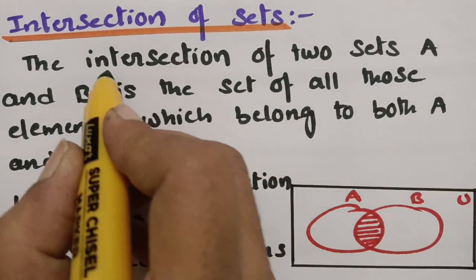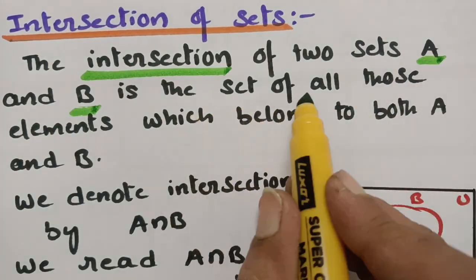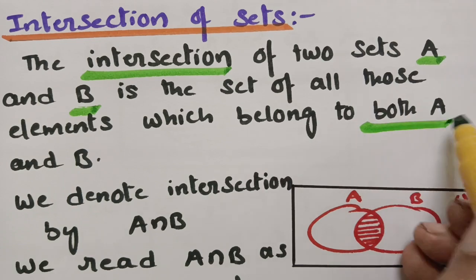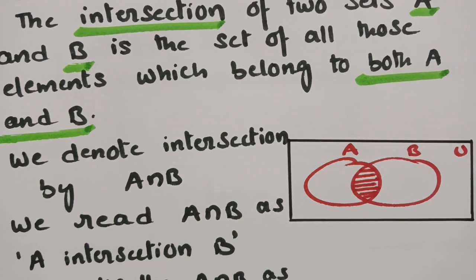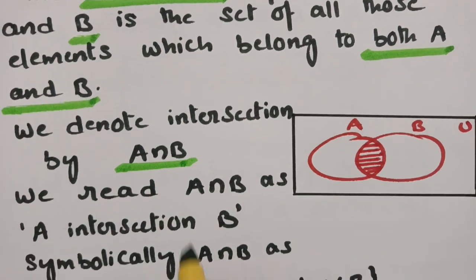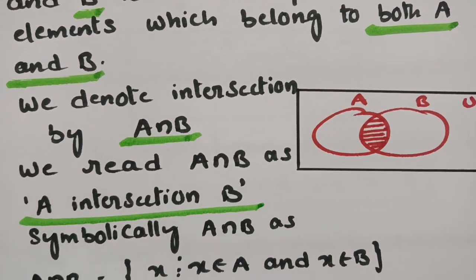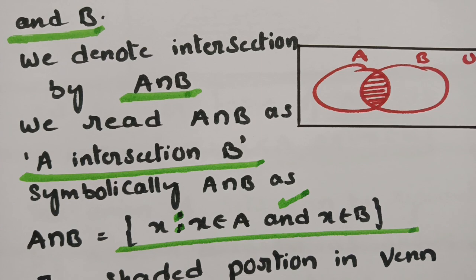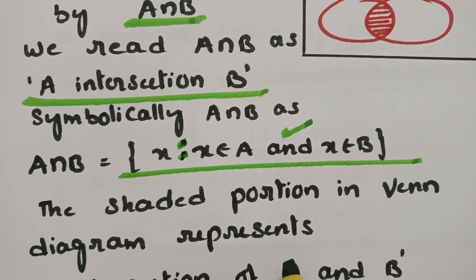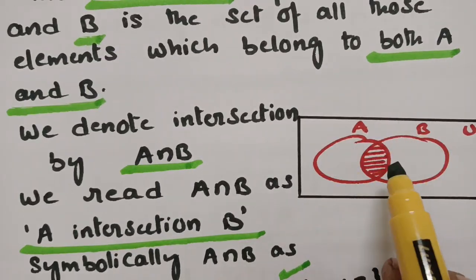The next one is intersection of sets. The intersection of two sets A and B is the set of all those elements which belong to both A and B. We denote intersection as A ∩ B. Symbolically, A ∩ B is represented as: X such that X belongs to A and X belongs to B. For union we use OR, and for intersection we use AND. This shaded portion in the Venn diagram represents A ∩ B — the common elements in A as well as B.